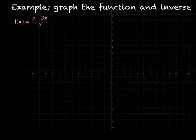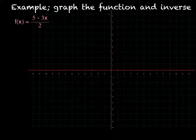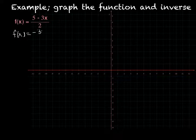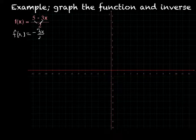So let's do some examples. This first one, we have f of x equals 5 minus 3x over 2. The first thing we want to do is figure out what kind of function this is. It is a line because the x is in the numerator. If I rewrite it, I can write it as f of x equals negative 3x over 2 plus 5 over 2.